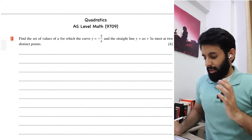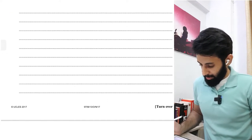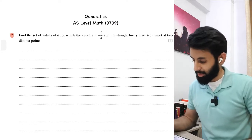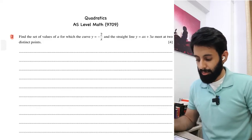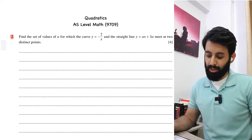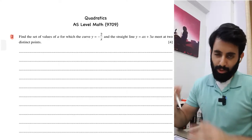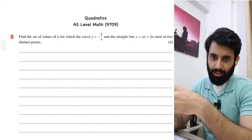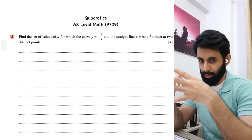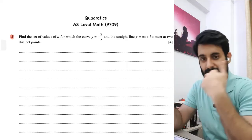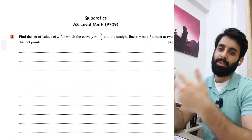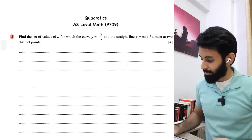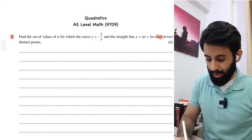Without wasting any more time, let's get straight to it. This question is from October/November 2017, Paper 1, Variant 3, Question 2. It says: find the set of values of a for which the curve y = -2/x and the straight line y = ax + 3a meet at two distinct points. Whenever a question talks about a curve and a straight line meeting, it will tell you at how many points - sometimes tangent, sometimes two points, sometimes no point.